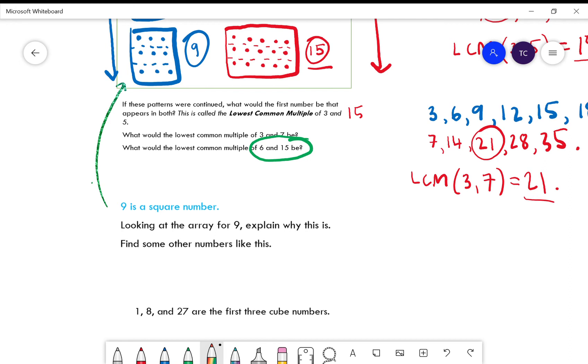We've already looked at a square number, which you can see is 9. It tells you that 9 is a square number and I've asked you to explain why this is. I'm going to explain it, hopefully it'll make sense.